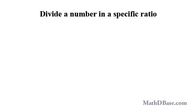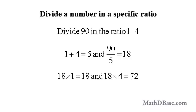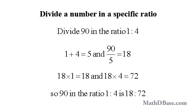To divide a number in a specific ratio, first form a fraction using the sum of the terms of the ratio as the denominator and the given number as the numerator, then multiply the quotient by both terms of the ratio. For example, let's divide 90 into the ratio 1 to 4. The sum of the terms is 1 + 4 = 5, and the fraction is 90 over 5, which reduces to 18. Multiplying the quotient by the ratio terms, we get 18 × 1 = 18 and 18 × 4 = 72. So 90 divided into the ratio 1 to 4 is 18 to 72.